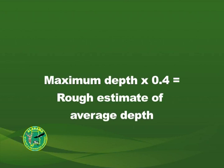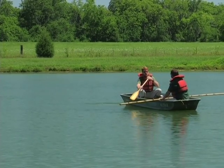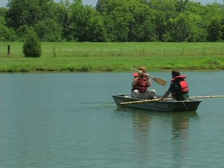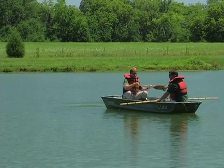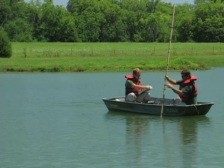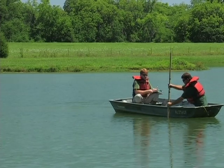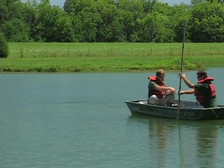A rough estimate can be obtained by simply multiplying the maximum depth of the pond by 0.4. However, a more accurate estimate can be calculated by taking the average of several depth measurements throughout the pool of water. There are two systematic approaches to collecting depth measurements that both provide accurate estimates.